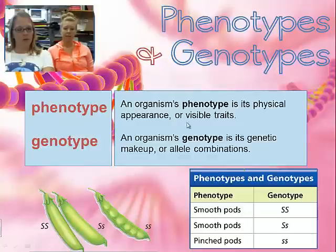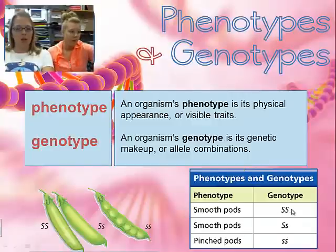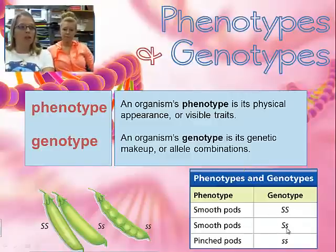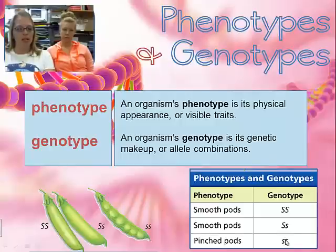In the bottom right corner, you'll see the phenotype and genotype for different characteristics. Smooth is dominant here — you can have two dominant genes for smooth pods, or you could be a hybrid. You really don't know your genotype unless you do genetic testing or observe reproduction. When a trait is recessive, like pinched pods, you do know the genotype — it's lowercase lowercase, meaning two recessive genes.